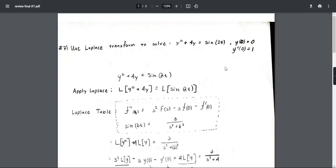Hello, this is Differential Equations. I'm going to be solving question number seven for the final review. Use Laplace Transform to solve y double prime plus 4y equals sine 2t, initial conditions being y(0) equals 0, y prime (0) equals 1.